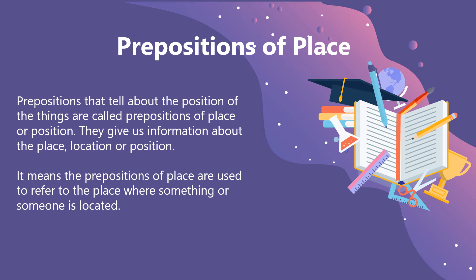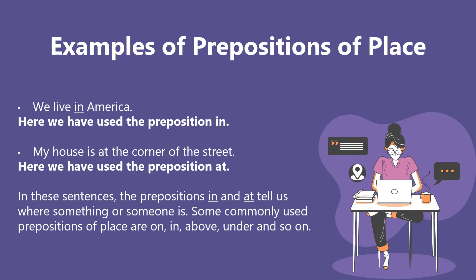Prepositions of place. Prepositions that tell about the position of things are called prepositions of place or position. They give us information about the place, location, or position — where something or someone is located. Examples: 'We live in America.' Here we have used the preposition 'in'. 'My house is at the corner of the street.' Here we have used the preposition 'at'. In these sentences, the prepositions 'in' and 'at' tell us where something or someone is. Some commonly used prepositions of place are: on, in, above, under, and so on.